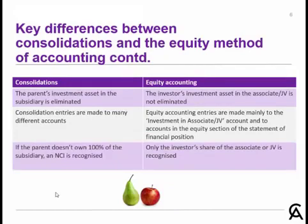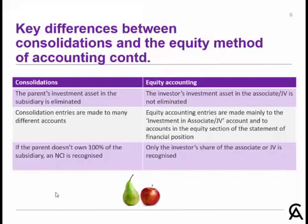Some more differences. When we have consolidations, the parent's investment asset in the subsidiary has to be eliminated. Whereas when we're equity accounting, we start with the investor's investment asset in the associate or joint venture, but we don't eliminate it. What we're going to do is add on to that investment cost with our equity accounting entries.